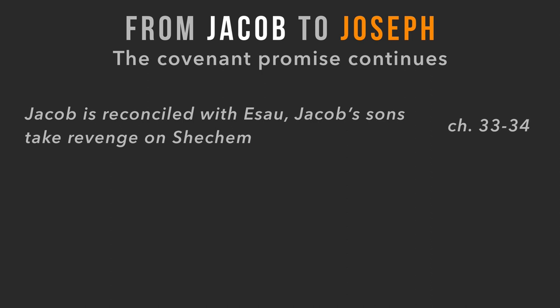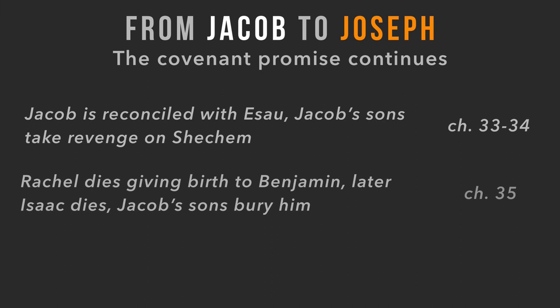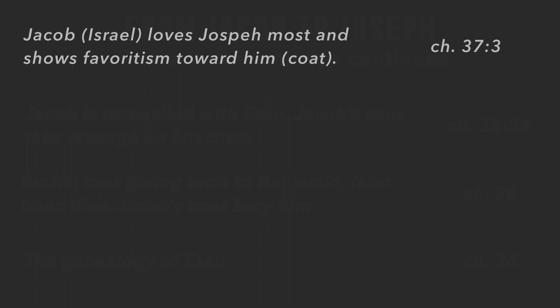From Jacob to Joseph: Jacob had swindled Esau and left for Haran. In Genesis 33 and 34, many years later, Jacob is reconciled with Esau. Then there is the event with Jacob's sons and a girl named Dinah, where they take revenge on Shechem. Rachel dies giving birth to their twelfth son Benjamin. Later, Isaac dies and Jacob's sons bury him. Then we have the genealogy of Esau.